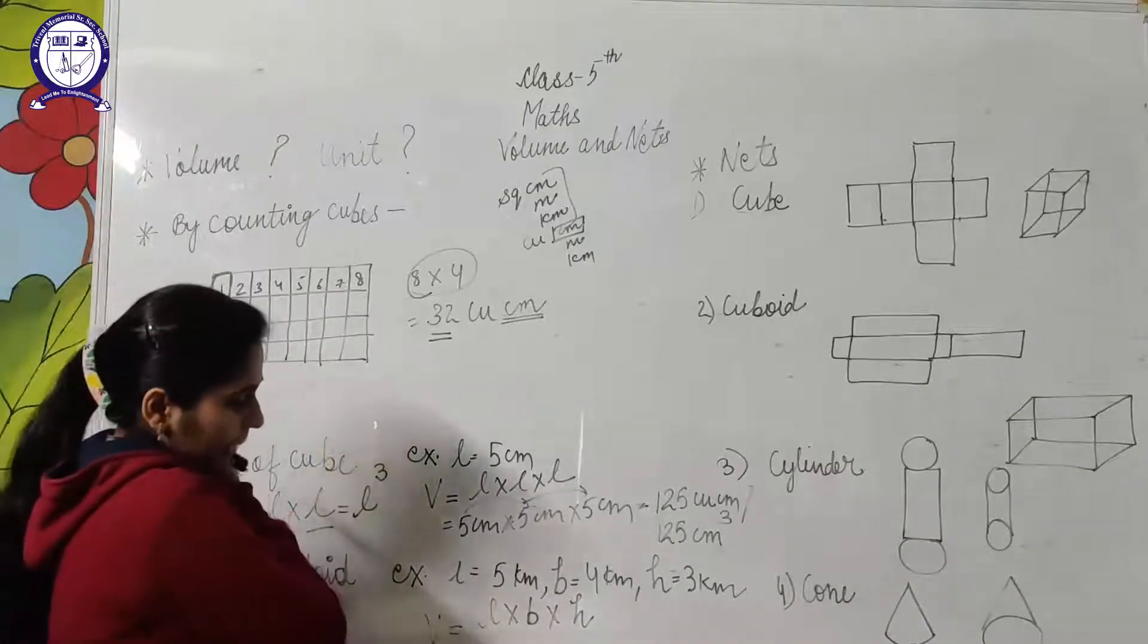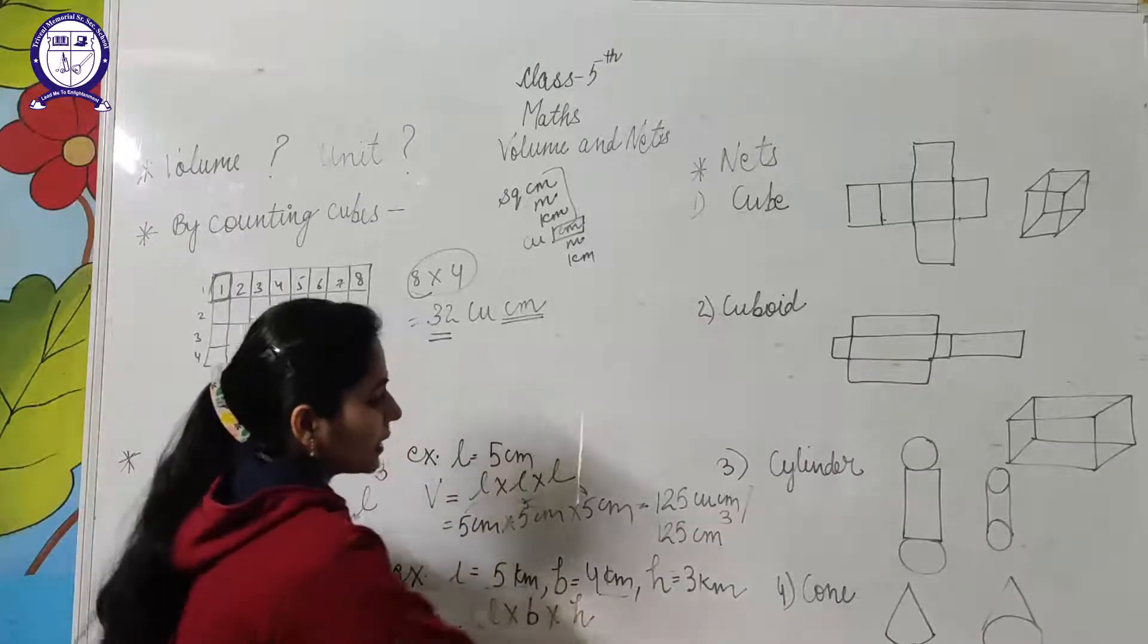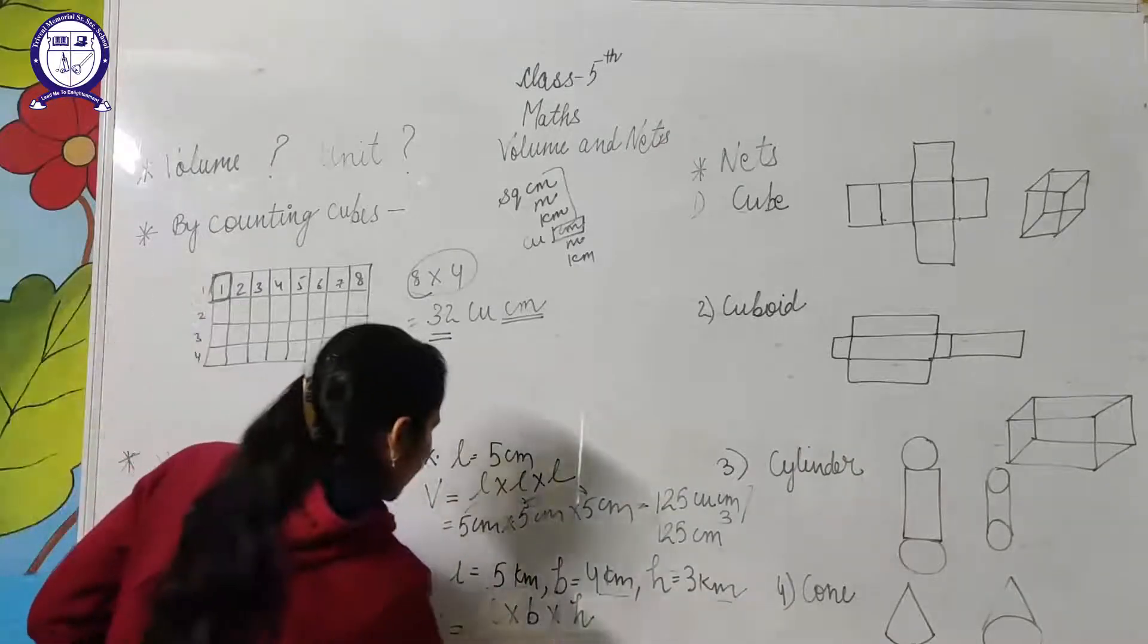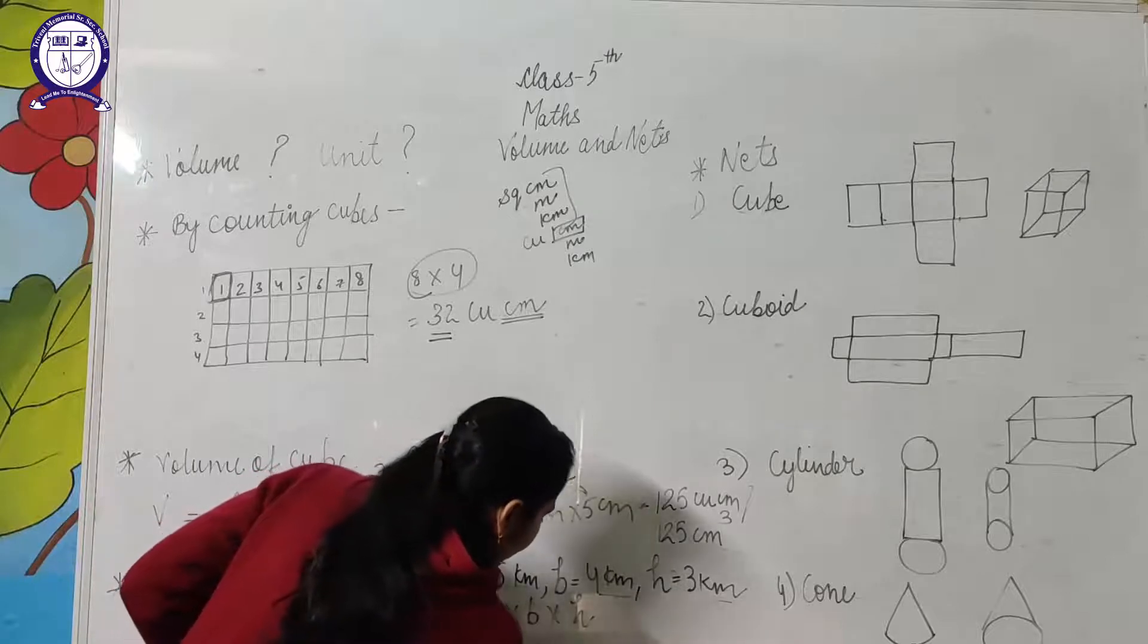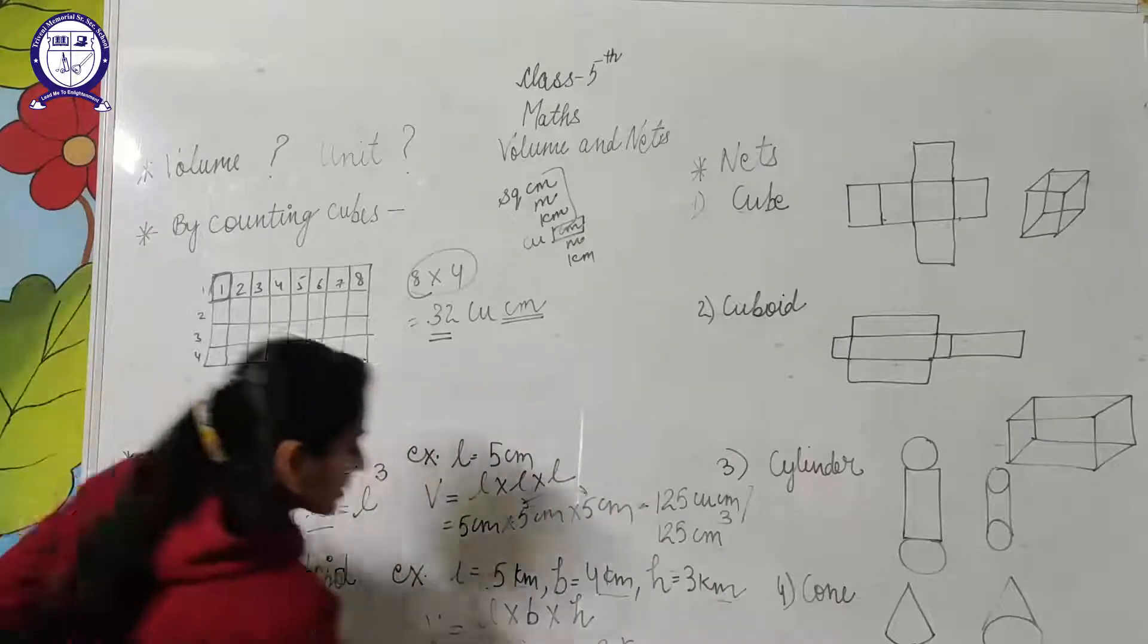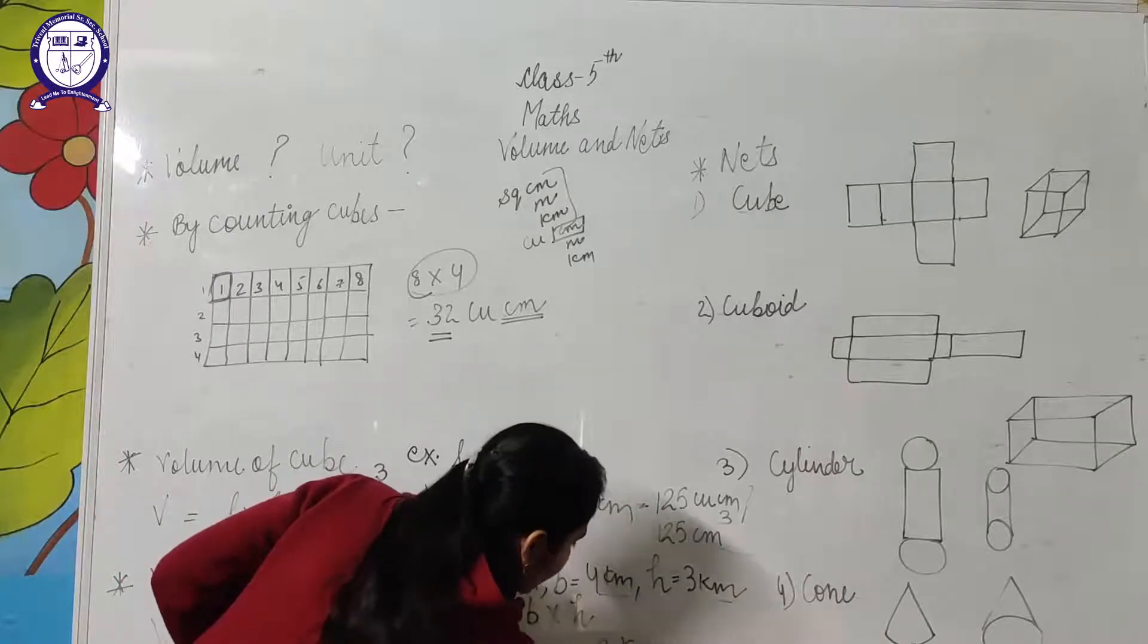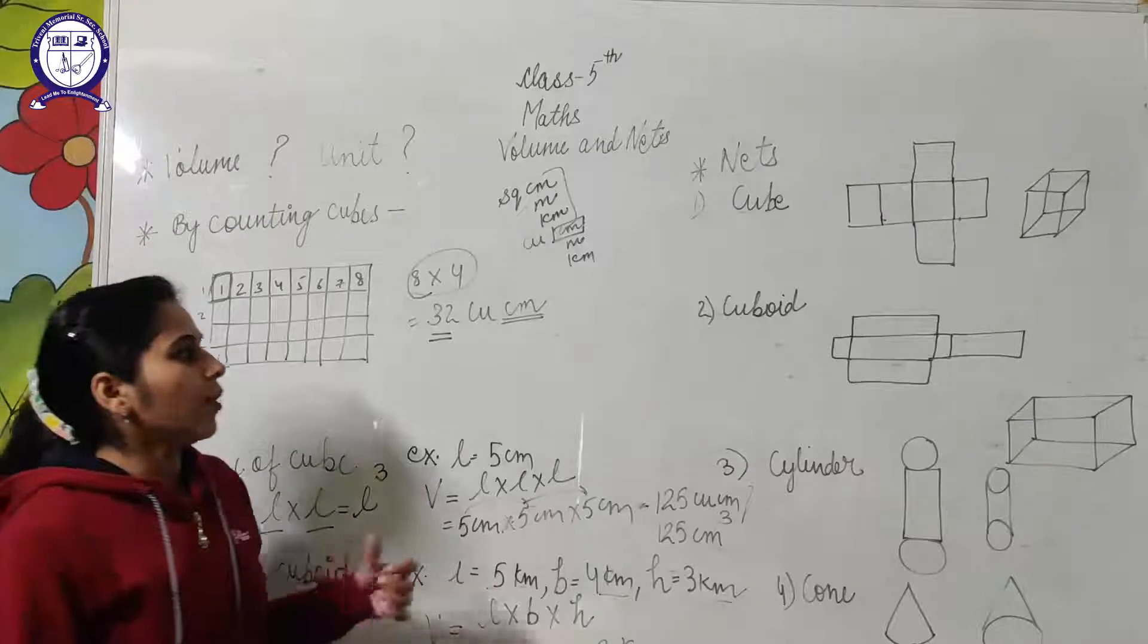Here is one example where length equals 5 kilometers, breadth equals 4 kilometers, and height equals 3 kilometers. We will multiply the length by breadth, then by height. 5 × 4 is 20, 20 × 3 is 60. We can write kilometer cube or cubic kilometer. This is the way to write the unit of volume.